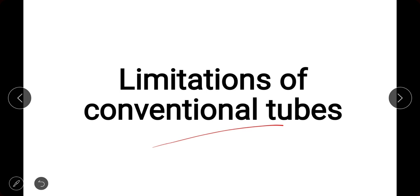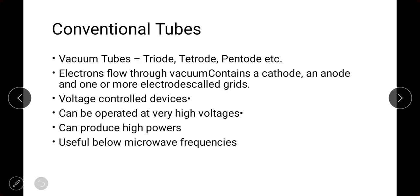In this video we are going to discuss the limitations of conventional tubes and the need for microwave tubes. Conventional tubes are vacuum tubes with three or more terminals: one terminal is called the cathode, another is called the plate or anode, and the third terminal is called the grid. The number of grids can be one or more than one.